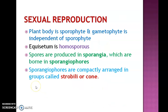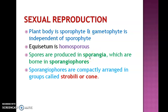Sexual reproduction: since the plant body is a sporophyte, they reproduce by means of spores. The spores in Equisetum are of similar type, so they are known as homospores. Spores are developed from spore mother cells after meiotic division inside the sporangia, so spores are haploid.